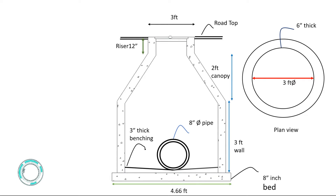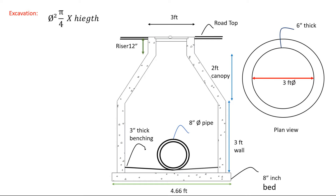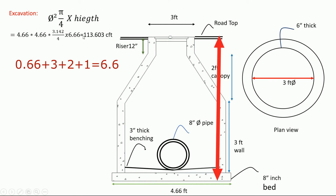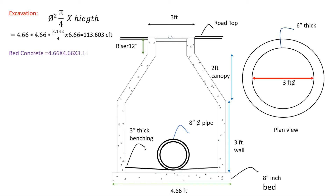Now we start excavation. We put the formula: diameter squared multiplied by pi divided by 4, multiplied by height. We put the values: diameter 4.66, multiplied by pi divided by 4, and height 3 to 5 feet, plus 12 inches, giving 6 feet total, with bed thickness of 8 inches added giving 6.66 feet. Result equals 113.603 cubic feet.